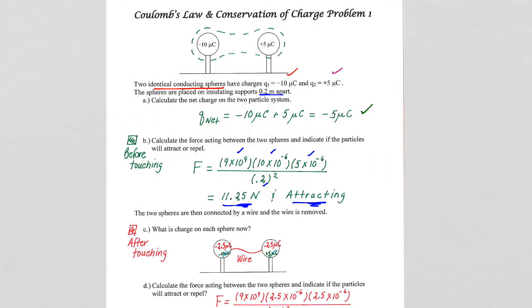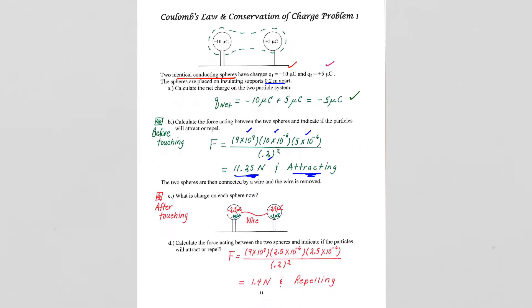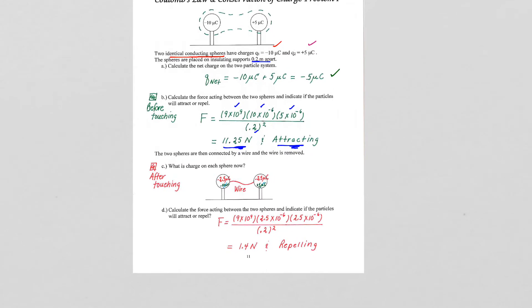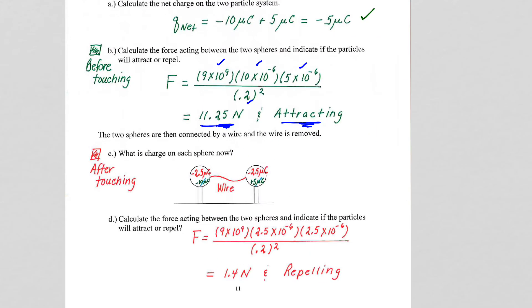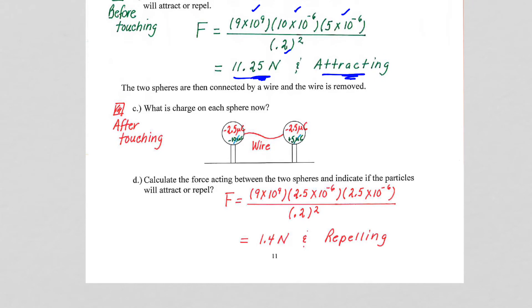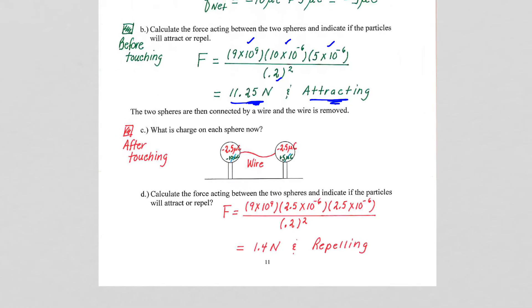After the spheres touch, or are touched electrically by putting a wire between them, the notion that they're identical spheres is important to us because we are assuming that they are identical in every way in terms of size, shape, and electrical characteristics.